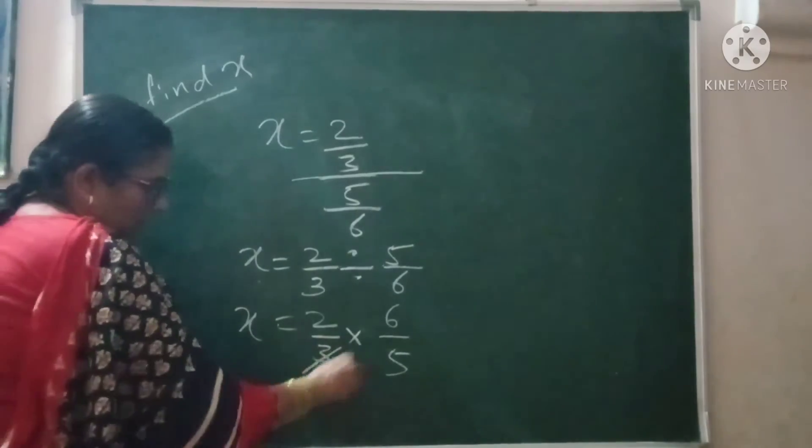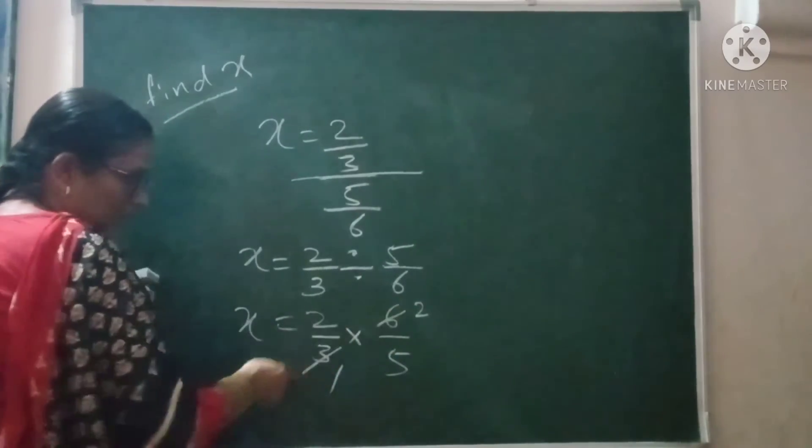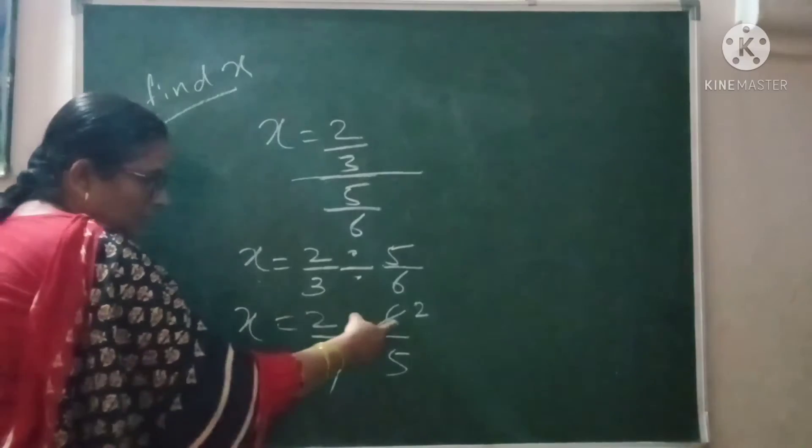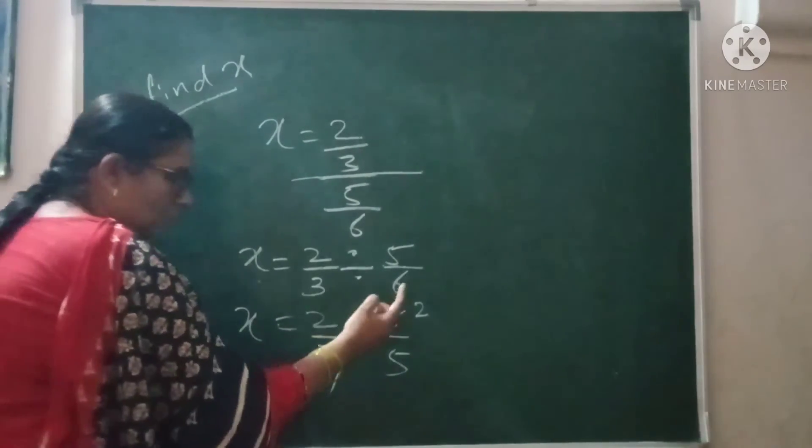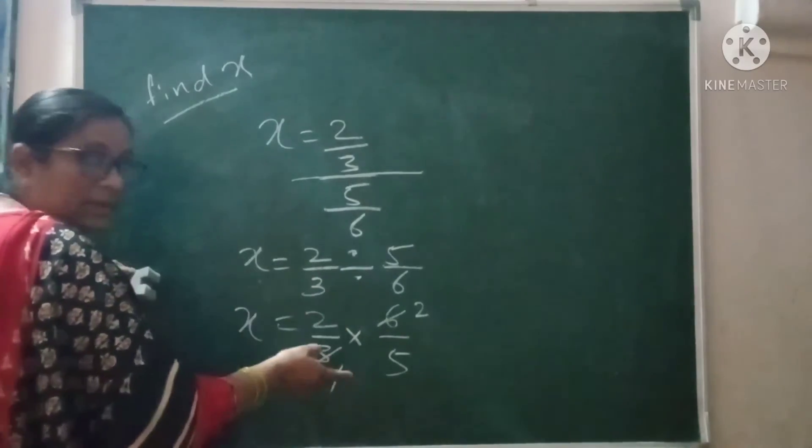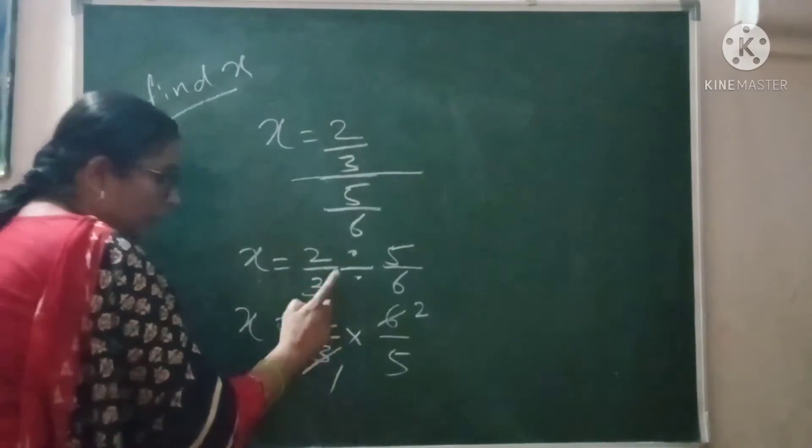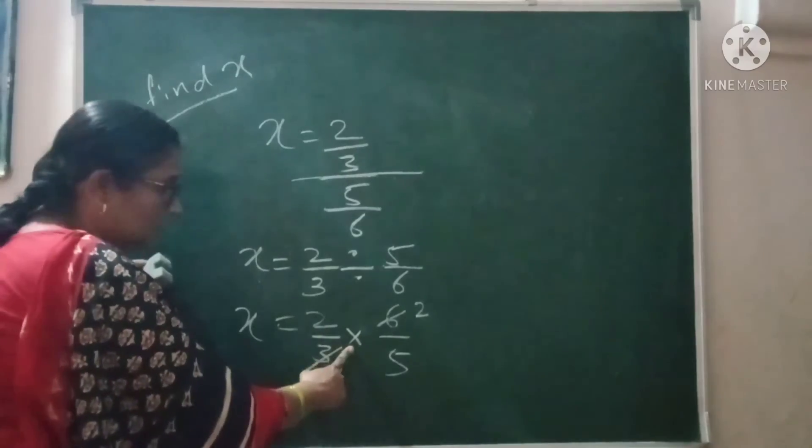3 and 6 cancel, don't cancel 2 and 2. Never cancel numerator with numerator. Always numerator goes with denominator and denominator goes with numerator. You can cancel if there is multiplication sign.